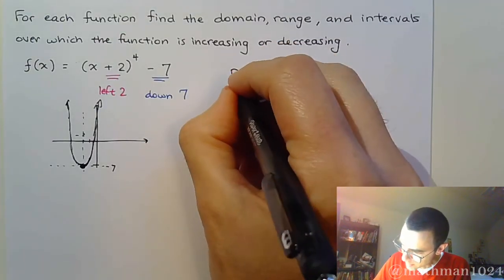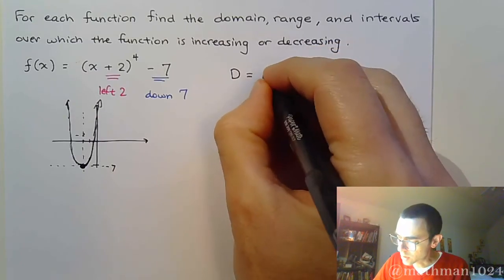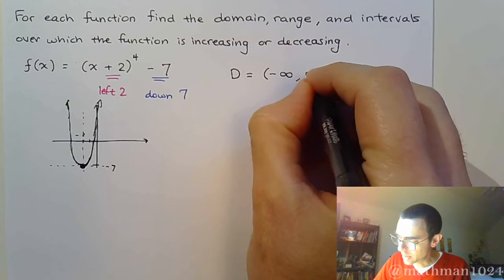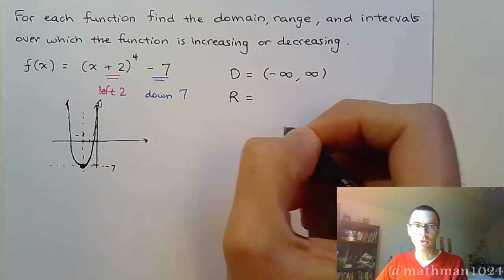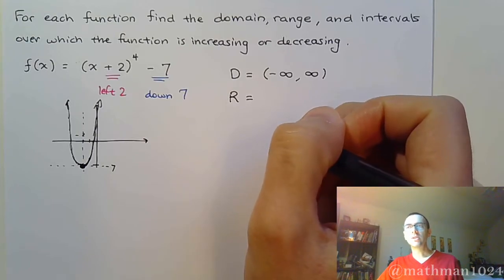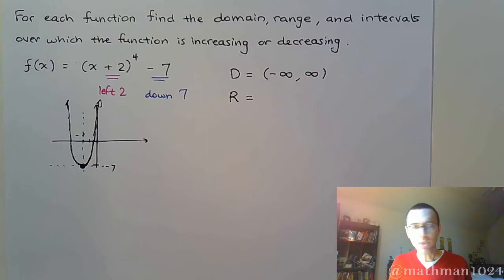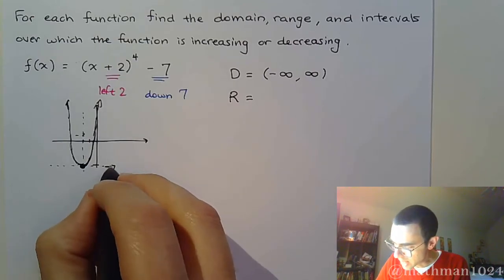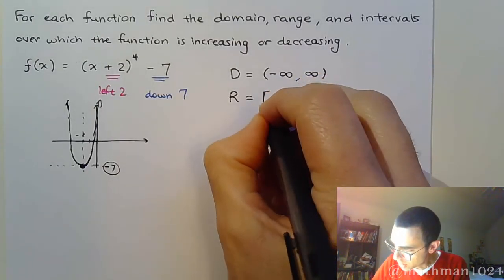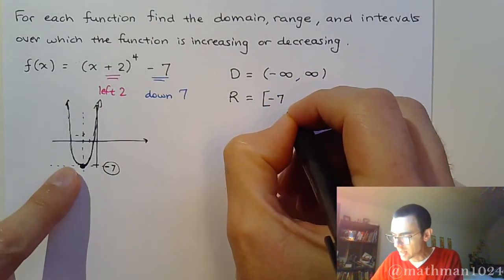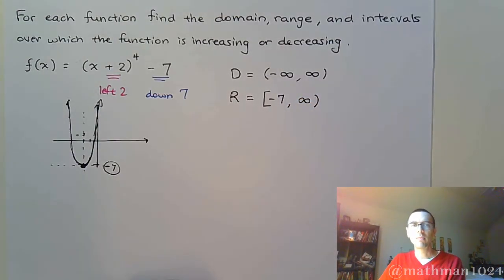The domain: for every polynomial function your domain is going to be all real numbers — we've mentioned that several times. Your range — this is where you look at the picture. The range is the set of y-values you use, going from the bottom to the top. The lowest this graph gets is all the way down at negative 7, so we're coming from negative 7 and it goes all the way up heading toward infinity.